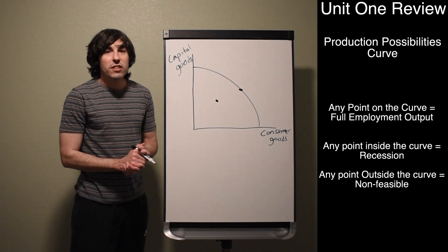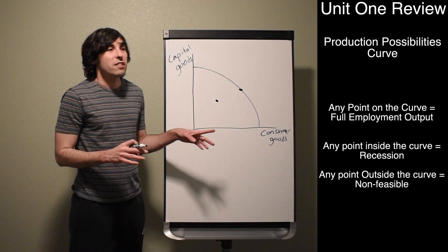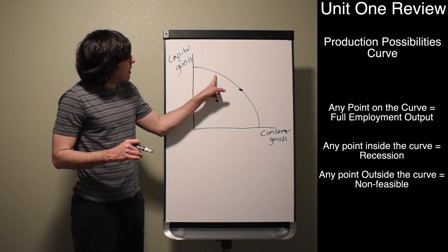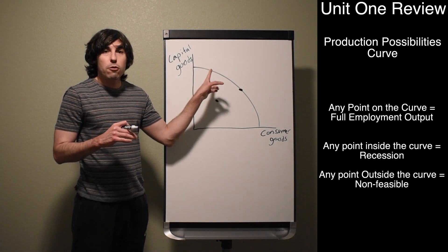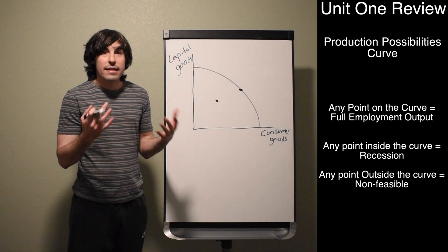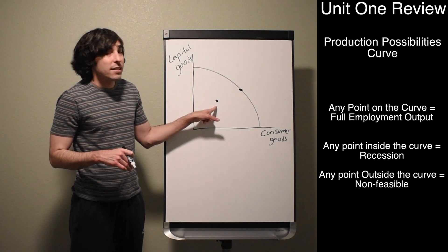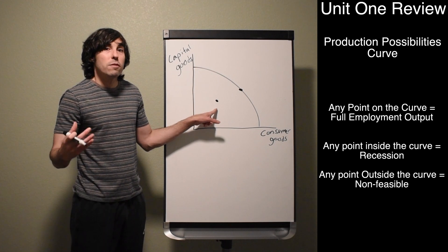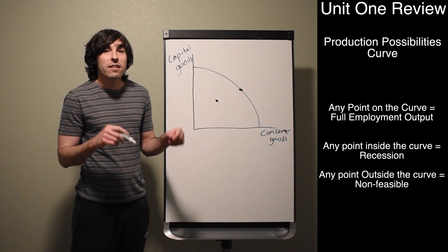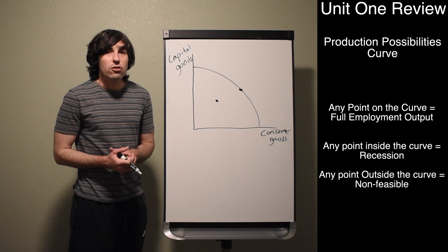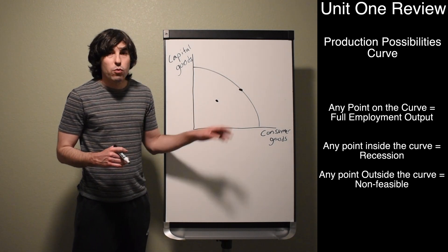Any dot inside the curve is going to be an economy experiencing a recession. If you're inside the curve, you're in a recession — this is how much stuff you would be able to make at full employment using all of your resources, namely labor. Anything inside the curve is a recession where we have higher unemployment than the natural rate, also known as cyclical unemployment.